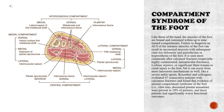Like those of the hand, the muscles of the foot are bound and contained within up to nine named compartments. Failure to diagnose an acute compartment syndrome of the intrinsic muscles of the foot can result in myoneural necrosis with subsequent claw toe deformity and paresthesias or hypoesthesia. It is seen most commonly after calcaneal fractures, especially highly comminuted intra-articular fractures, Lisfranc injuries, or significant blunt trauma or crush injury to the foot, but can also occur from more innocuous mechanisms like a severe ankle sprain.